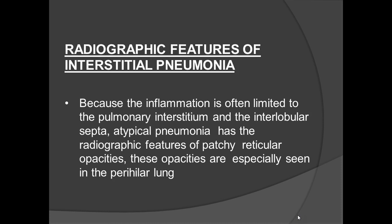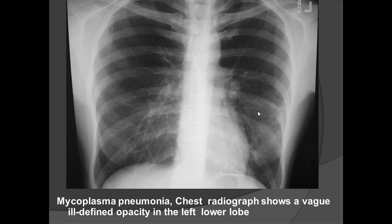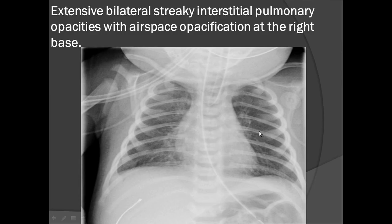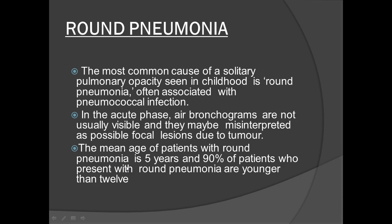Interstitial pneumonia involves thickening of the alveolar walls and lung interstitium without involving the alveoli themselves. It appears as linear reticular markings in the perihilar region, most commonly seen in Mycoplasma pneumonia or Pneumocystis jirovecii infections. Cases of mycoplasma pneumonia may show an ill-defined opacity in the left lower lobe or bilateral perihilar reticular opacities, more prominent at the right lung base.